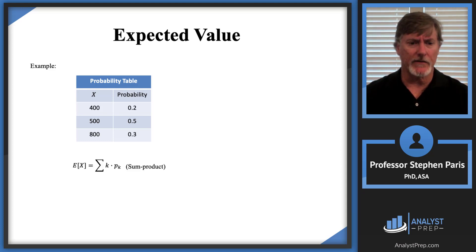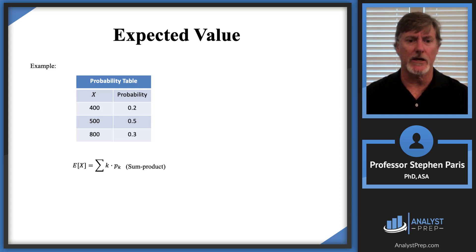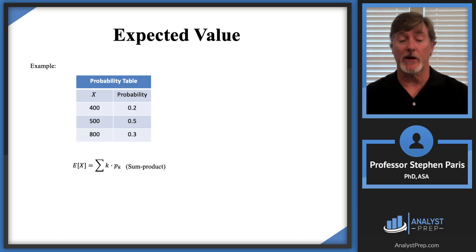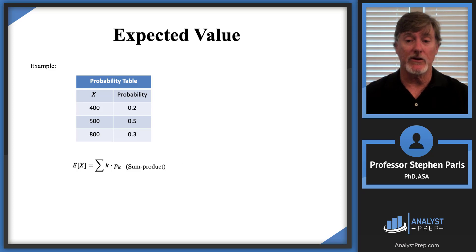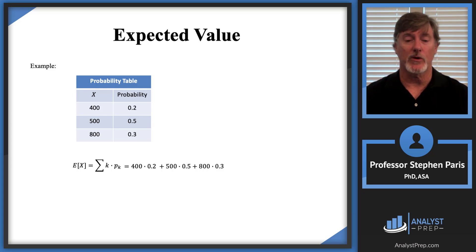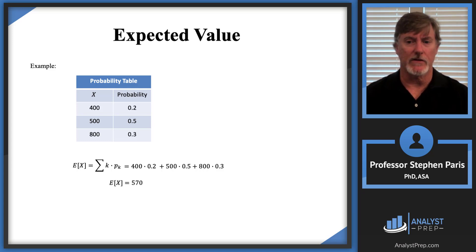We can calculate the expected value of the random variable — that's just the sum product. You take each value in the support and multiply it by its associated probability, then add them all up. So we get 400 times 0.2, plus 500 times 0.5, plus 800 times 0.3, which gives us 570.